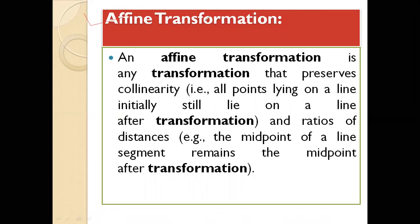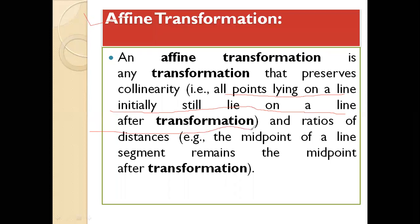So what is an affine transformation? Affine transformation is any transformation that preserves collinearity — collinearity means that all points lying on a line initially still lie on the line after transformation. So parallelism will be maintained. And ratios of distances — for example, the midpoint of a line segment remains the midpoint after transformation. So that is the definition of what affine transformation is.